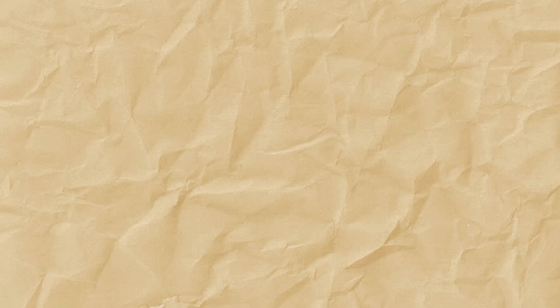As a second step, the tool searches for all of the blocks which need a supporting block next to or beneath them — for example, lily pads, torches, or reeds. The tool remembers all of the blocks which are supporting blocks to ensure that these are placed before the blocks which need support.